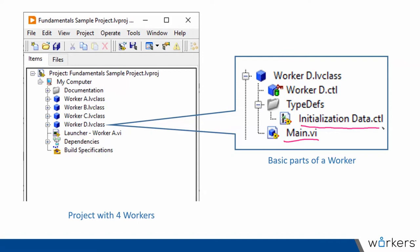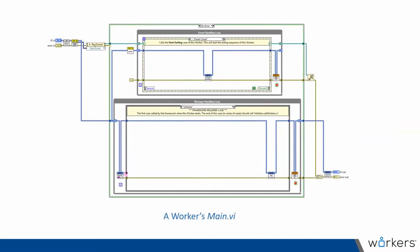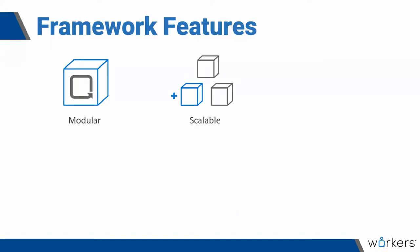What does the queue message handler of a worker look like? The main VI of a worker resembles the look and feel of the LabVIEW queue message handler template. At the top we have an event handling loop, which is optional, then a message handling loop, which is not optional — messages are dequeued here, data is acted upon in the case structure, and at the end we have an error handler. Basically, a Workers application consists of a hierarchy of queue message handlers that look like this.